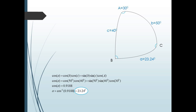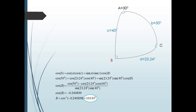Now we have three sides, so we can use the second and third versions of the law of cosines to find angles B and C. Using the second version, starting with side b, we get: cos 50 = cos 23.24 · cos 40 + sin 23.24 · sin 40 · cos B. Solving for cos B and evaluating, we get cos B ≈ −0.240899. Hence, vertex B = arccos(−0.240899) ≈ 103.93 degrees.